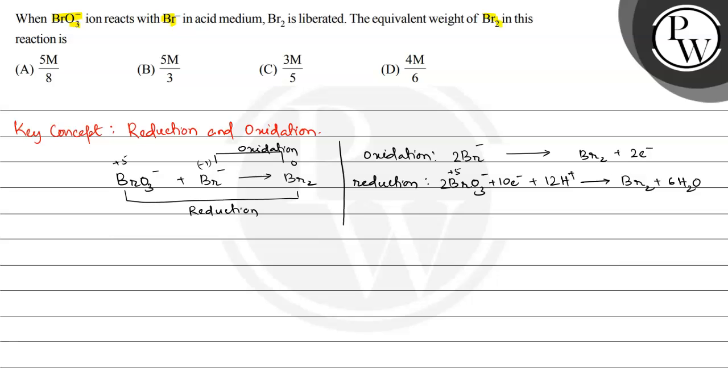We have two reactions: one oxidation and one reduction. In oxidation, the change in number of electrons is 2, and in reduction, the change in number of electrons is 10.